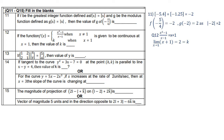Question 13: the matrix [1, 2; 2, 1] multiplied by [x; y] gives [5; 4]. Find the value of y. Multiplying gives the system: x + 2y = 5 and 2x + y = 4. Solving this system yields y = 2.